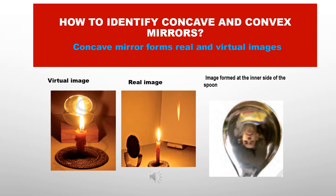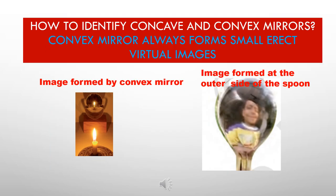A real image is one that can be formed on a screen, and an image that cannot be formed on a screen is called a virtual image. A convex mirror always forms small, erect, and virtual images. You must have seen the rear-view mirror at the sides of vehicles — that is a convex mirror in which small images are seen.